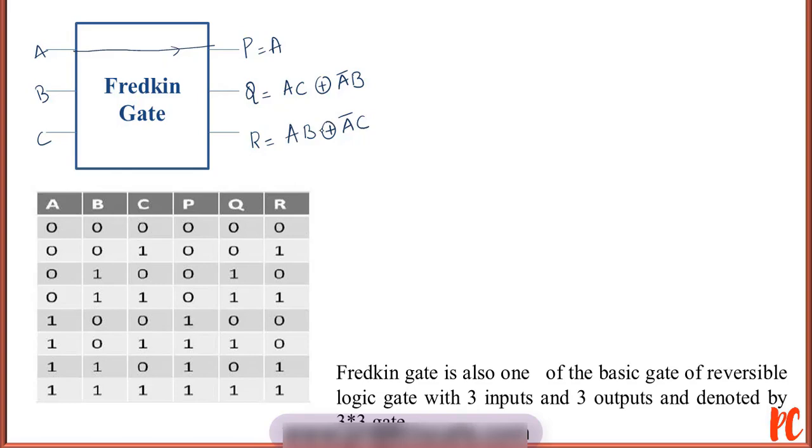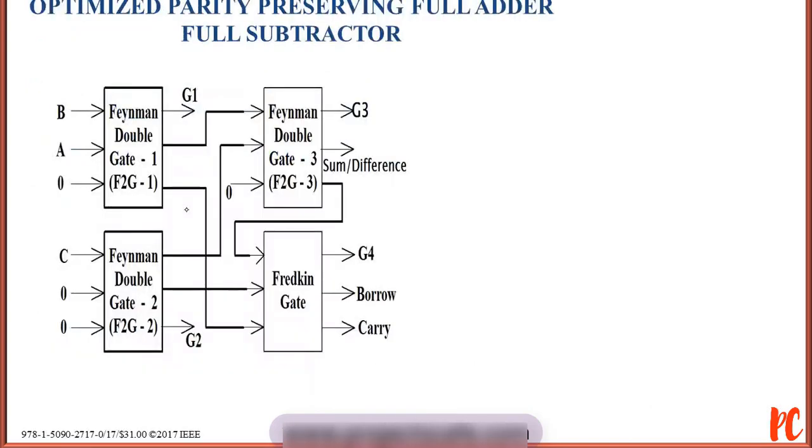In this gate, the input signals Q and R are routed to the same or exchanged output ports depending on the value of the control signal P. Here is the circuit diagram of an optimal fault-tolerant full adder cum subtractor. It contains three double gate Feynman gates and a Fredkin gate.